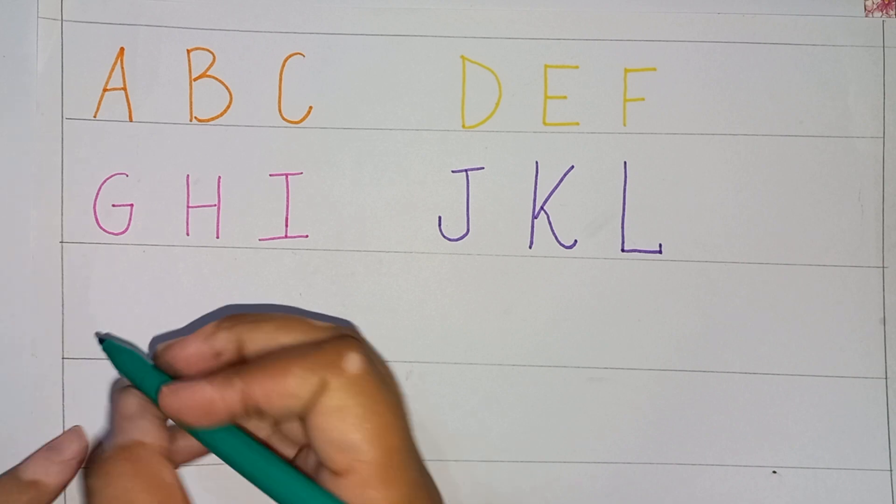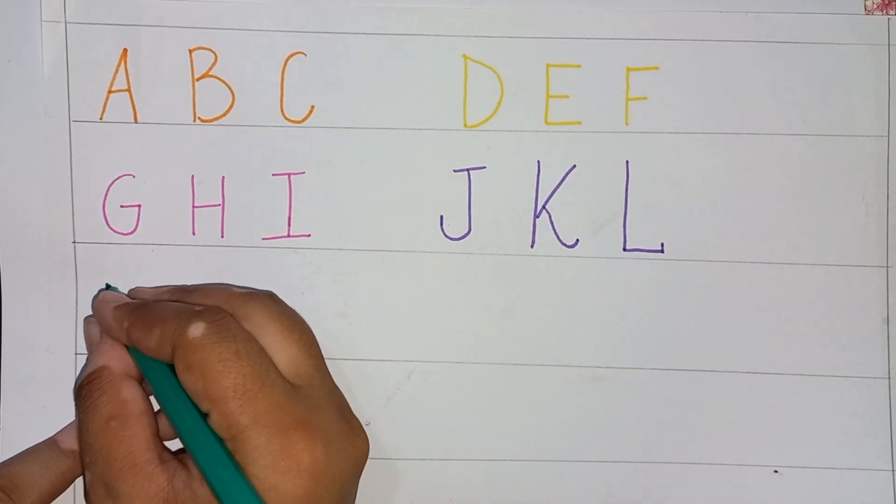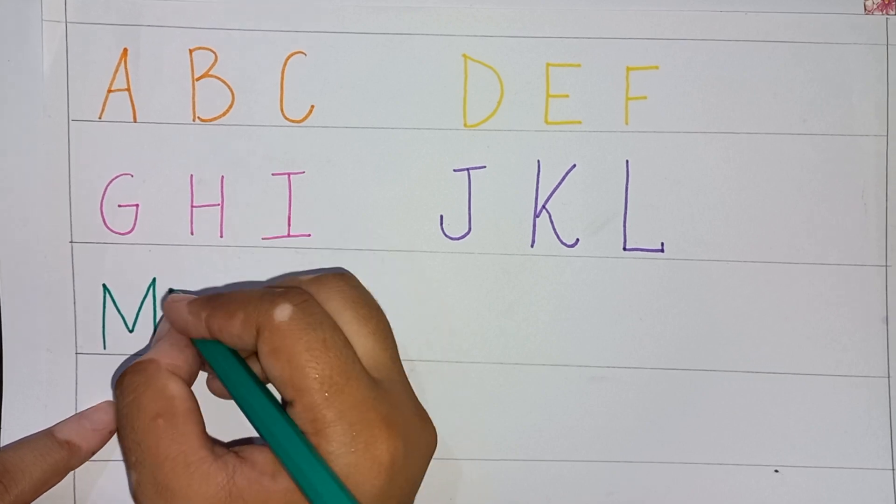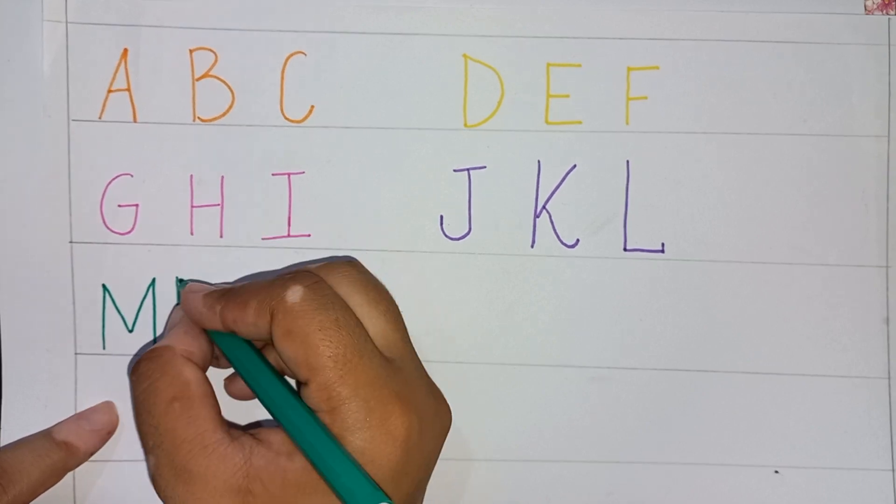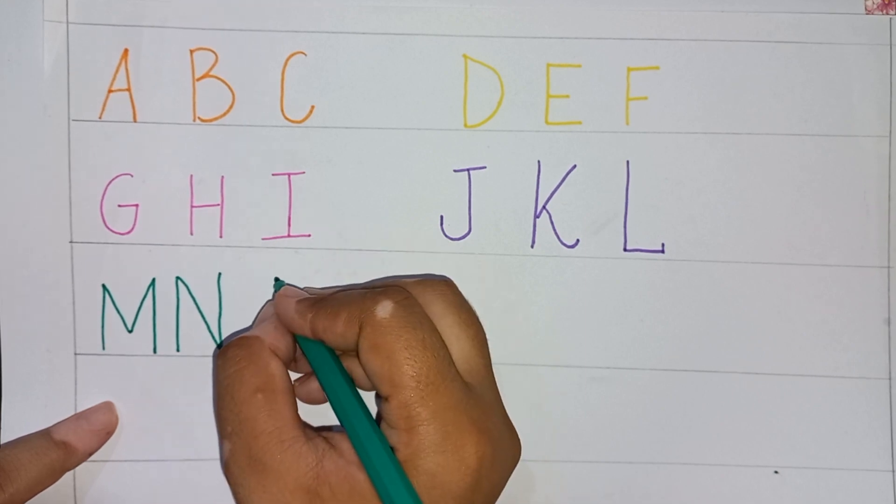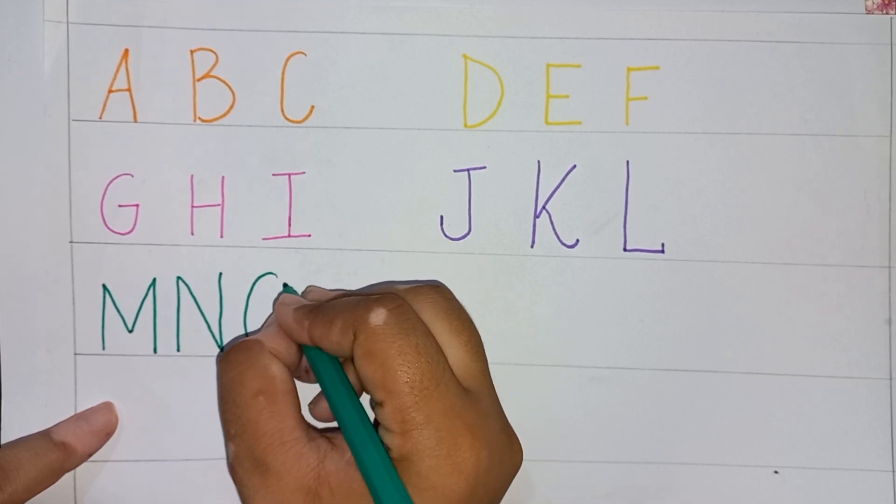M, M for mummy. N, N, N for nest. O, O for octopus.